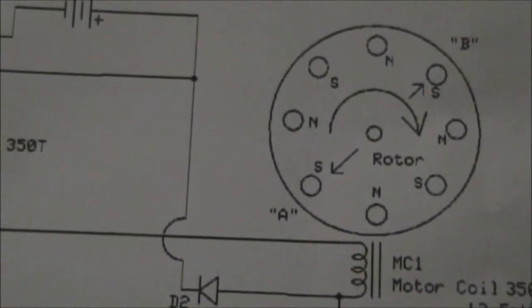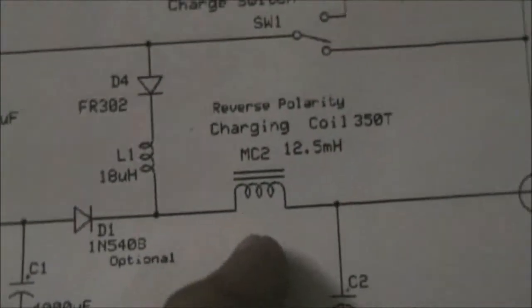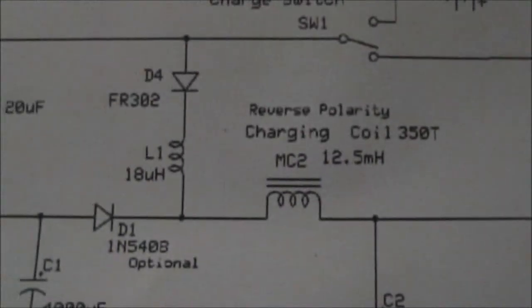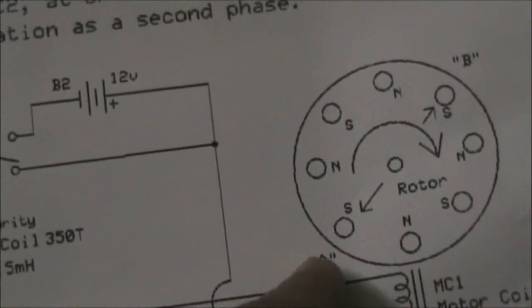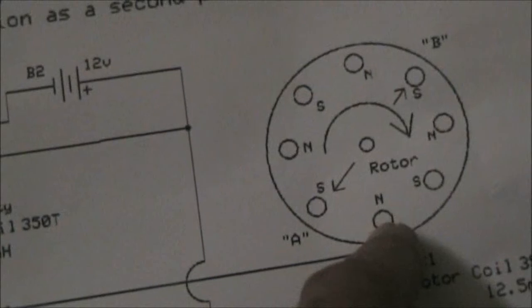You can see the rotor's north-south, north-south magnets. This coil is reverse polarity connected. So when the supply goes into negative, it creates a south pole at the top rather than a north pole. So this is a south pole at this point of the rotor and this is a north pole at this point of the rotor.